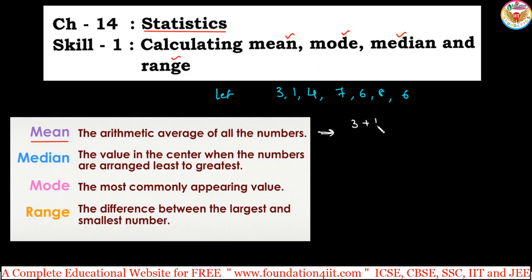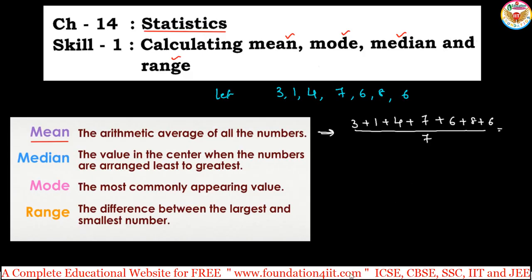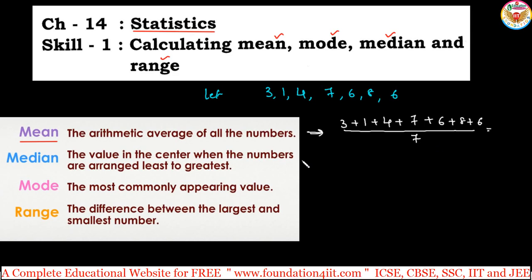Let's take some example numbers: 3, 1, 4, 7, 6, 8, 6. To find the mean, add all: 3 + 1 + 4 + 7 + 6 + 8 + 6, divided by 7 (the number of observations). The sum is 35. Divided by 7, you get 5. So the mean is 5.